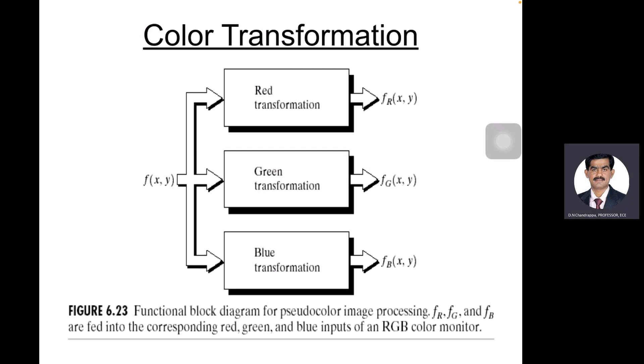So here this is the pseudo color processing. Same thing in the previous what we explained, with adding additional processing, will become hs, hr, hg, and hb. Monochrome images are available. This is what we call monochrome images.